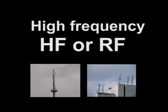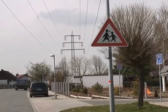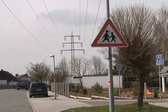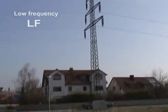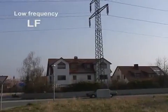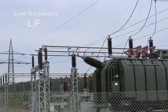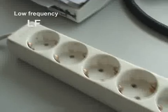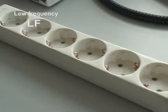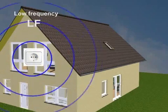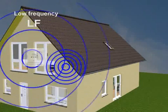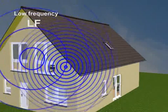The low frequency stands for the typical sources of radiation coming from our electrical network, such as high voltage current and high voltage lines, transformers, house installation lines, or traction power.